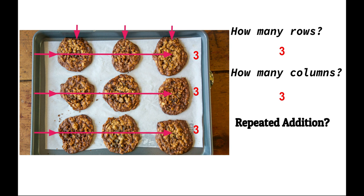There are three cookies here, and three cookies here, and three cookies here. So I can quickly figure out how many there are in all by just adding these up: three plus three plus three. My repeated addition — repeated means doing it over and over — is three plus three plus three, because there were three cookies in row one, three cookies in row two, and three cookies in row three. And that makes nine cookies in all.